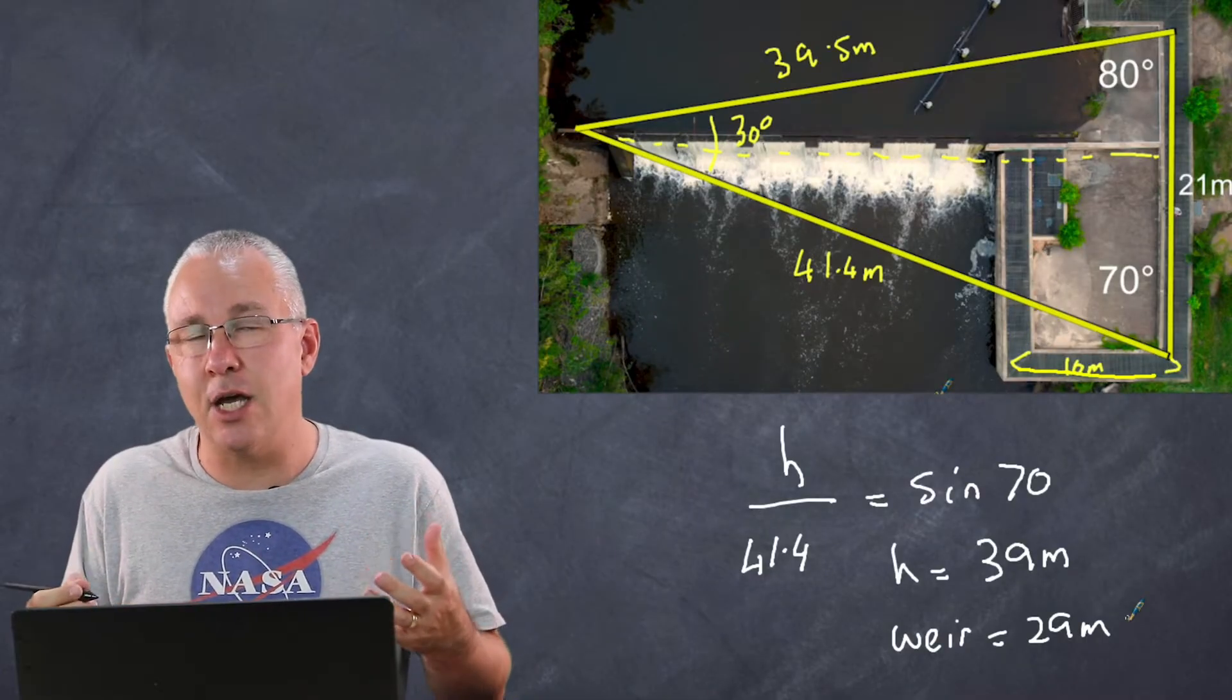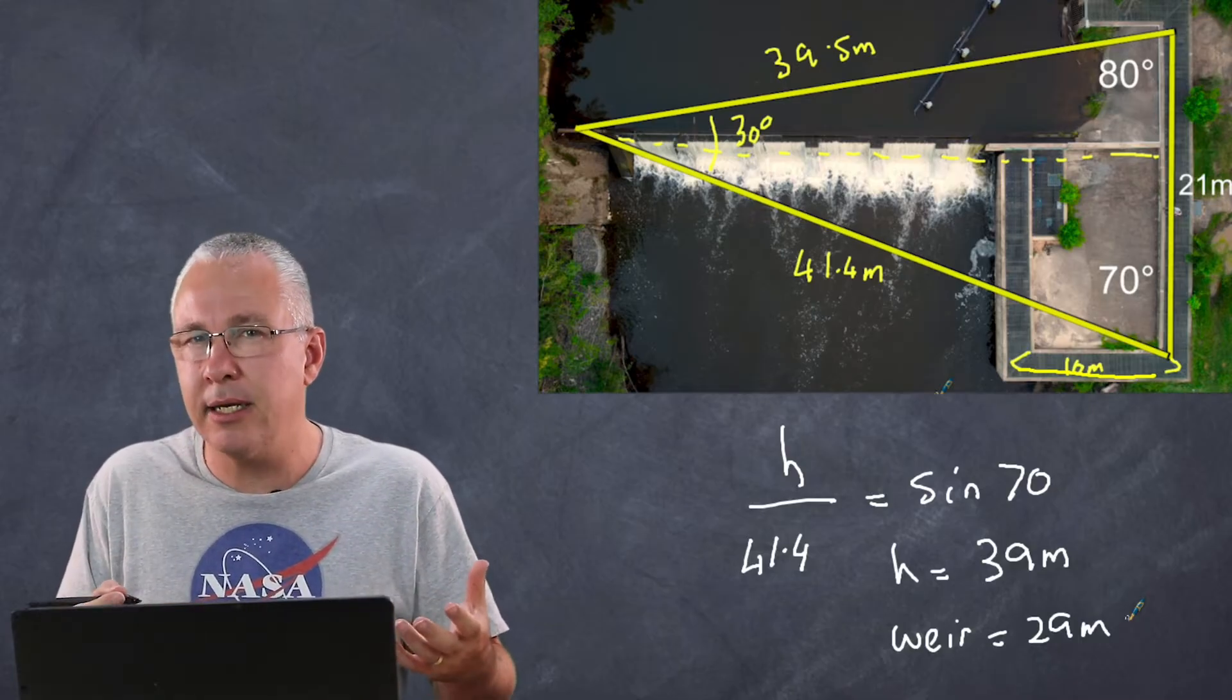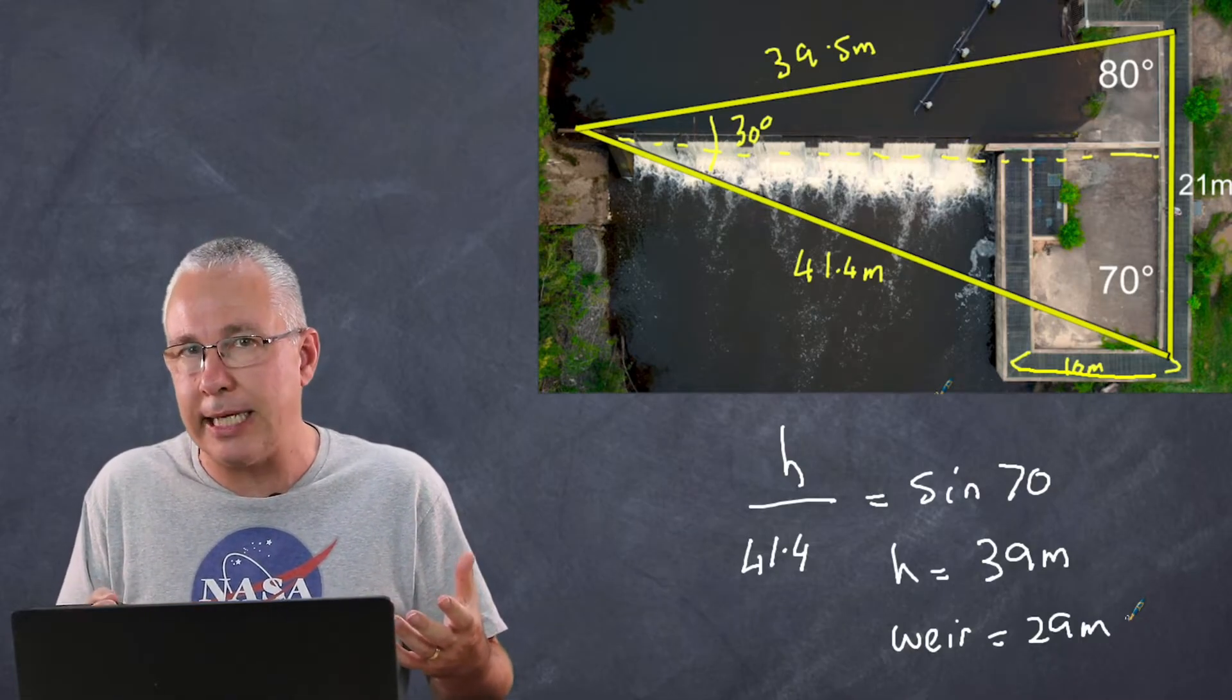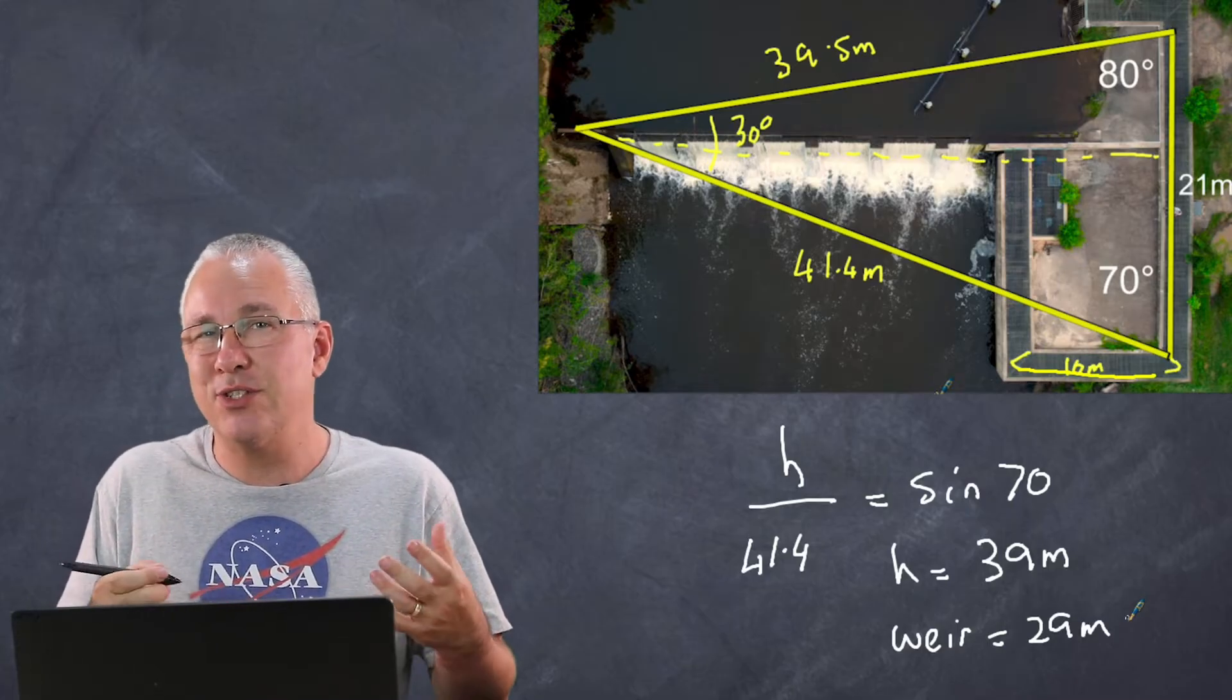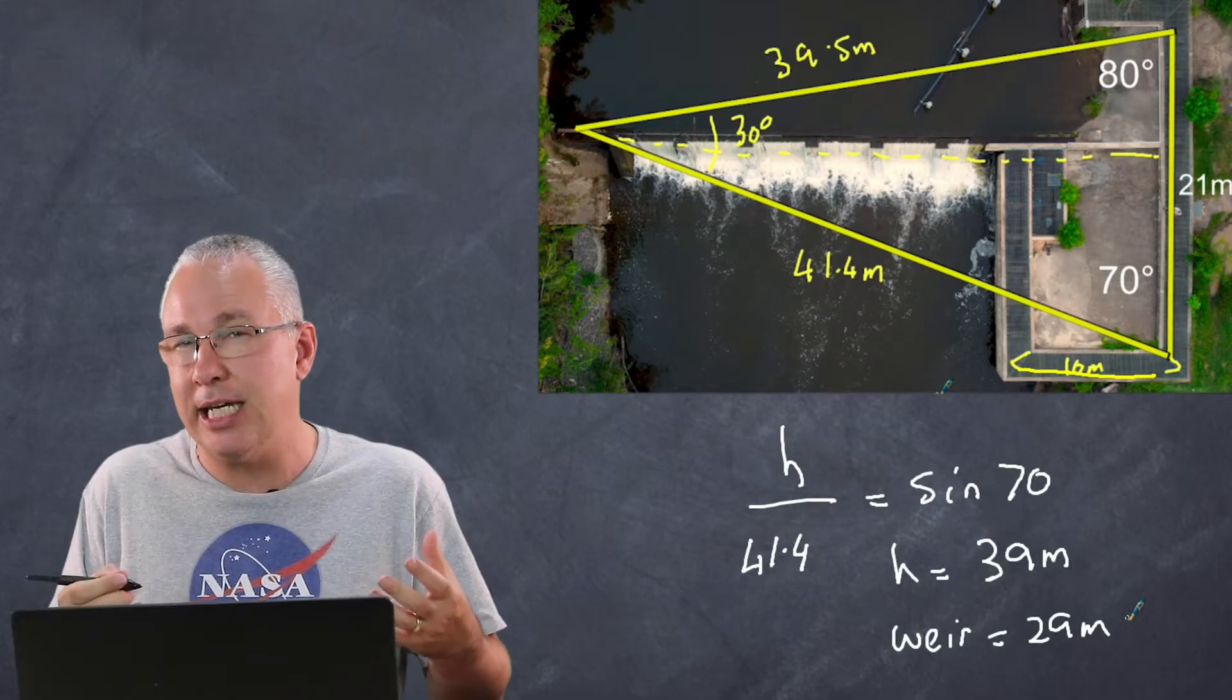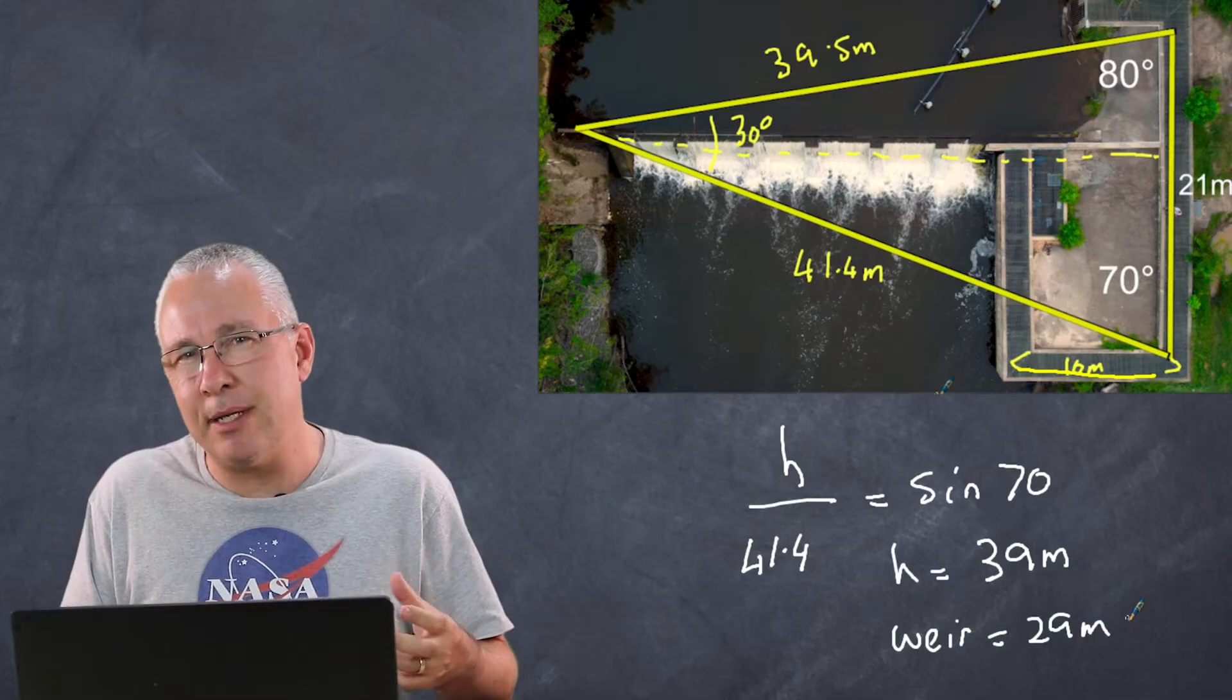This is useful for objects that are really close and clearly you can measure angles from. But when it comes to stars, then it becomes a little bit problematic because of the extreme distances that are involved. As a result, the baseline needs to be very, very large in order to get decent angles.